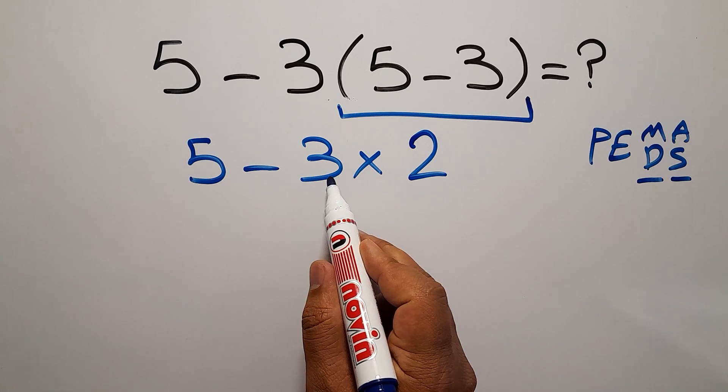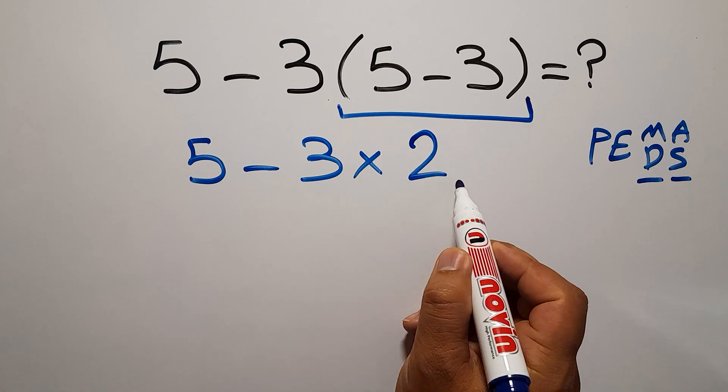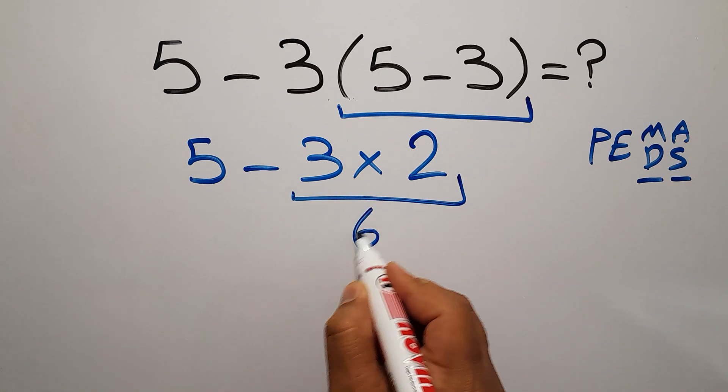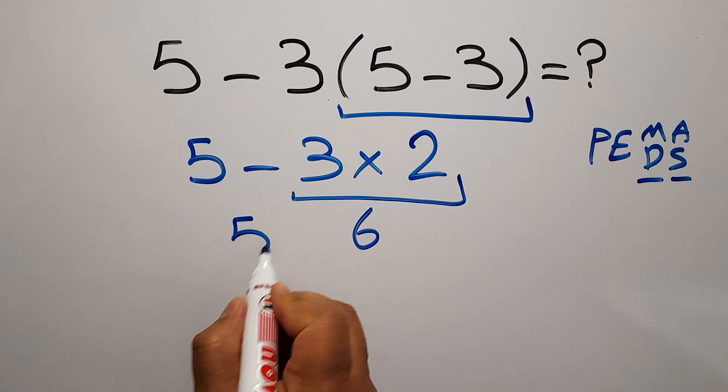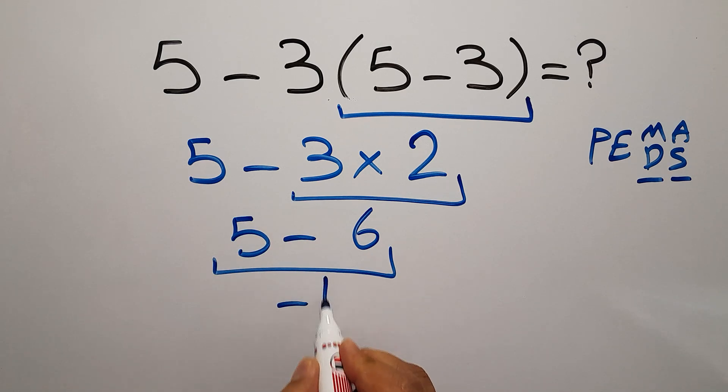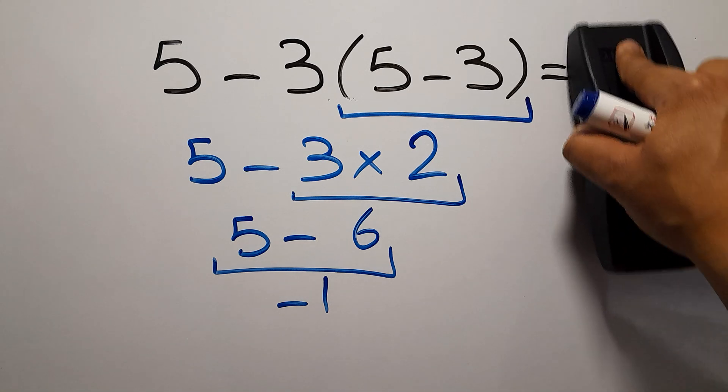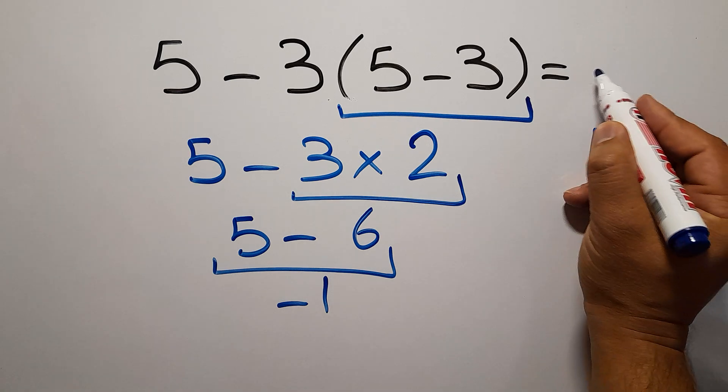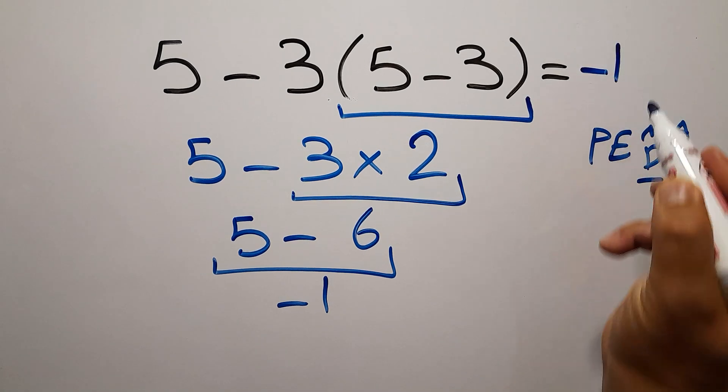So 3 times 2 gives us 6. So we have 5 minus 6 which equals negative 1. So therefore our final answer to this problem is just negative 1. The correct answer is negative 1.